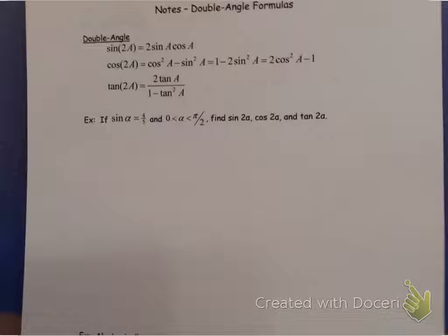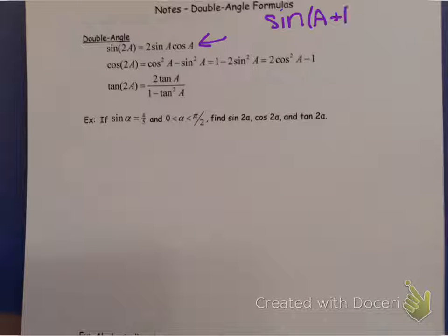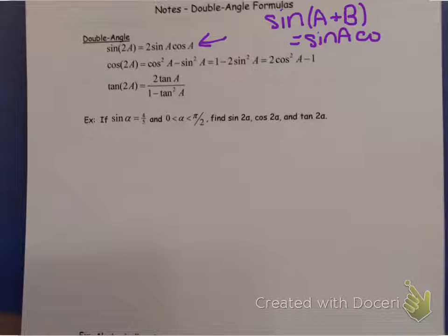The double angle formulas are actually derived from the sum and difference formulas. I'm not going to prove it for all of them - I'll just discuss it really briefly and show you how it happened for the first identity. They started out with the sine of A plus B identity, which says sine of A cosine of B plus cosine of A sine of B.